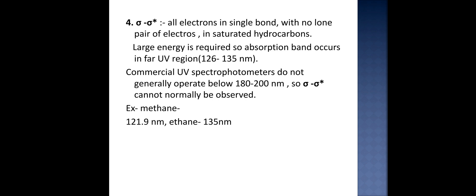Commercial UV spectrophotometers do not generally operate between 180 to 200 nanometers. That's why σ to σ* anti-bonding orbital transition cannot normally be observed. Example is methane, whose wavelength is 121.9 nanometers, and ethane, whose wavelength is 135 nanometers.